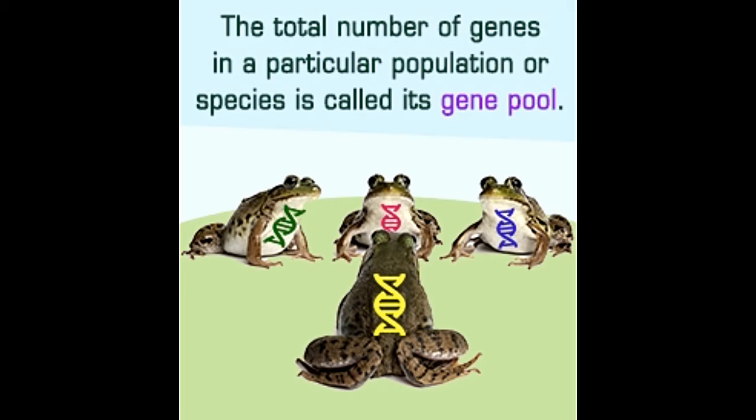For example, a group of deer living in a forest forms one population, while a group of the same species living on a wildlife reserve forms another.